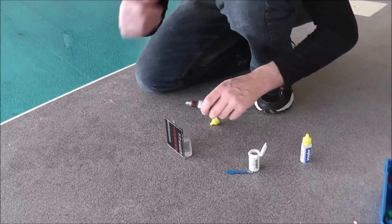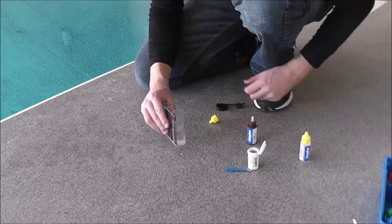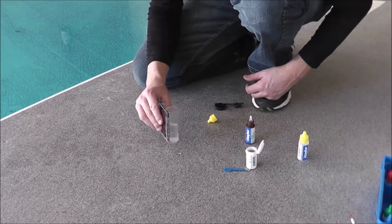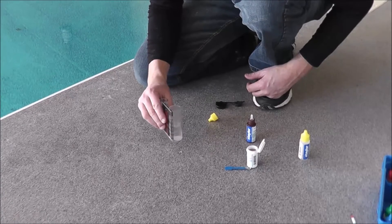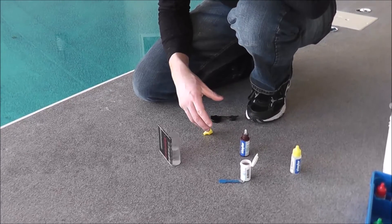So we'll go back to this reagent. We'll add one drop. That's 0.2 parts per million. Swirl it around. And it turned clear. So now we know we have 0.2 parts per million combined chlorine.